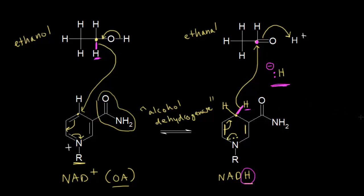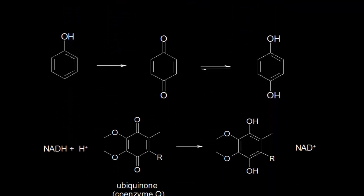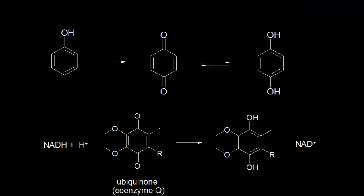This NAD+/NADH conversion and vice versa is extremely important in biochemistry — it happens in numerous biochemical reactions, so it's important to understand what's happening with those electrons. Let's look at another biochemical example of redox. Here we have, on the left, phenol. And once again, we're most concerned about this carbon — the one that's attached to this oxygen.